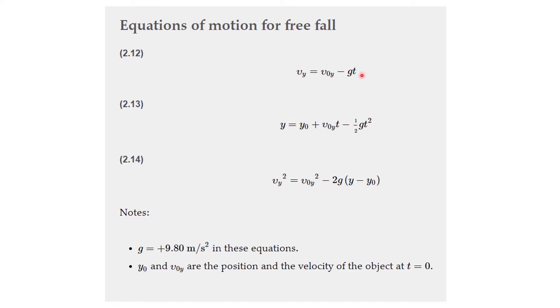And so that gives us the following equations for free fall. The first one is v sub y is equal to v sub 0 in the y direction minus g t, because the acceleration is minus g in the y direction. y is equal to y 0 plus the initial velocity in the y direction times t minus one half g t squared. And finally, v sub y whole squared is v sub 0 in the y direction whole squared minus 2g times y minus y 0. And note that g is 9.8 meters per second squared, and these are the position and velocities at time t equal to zero.